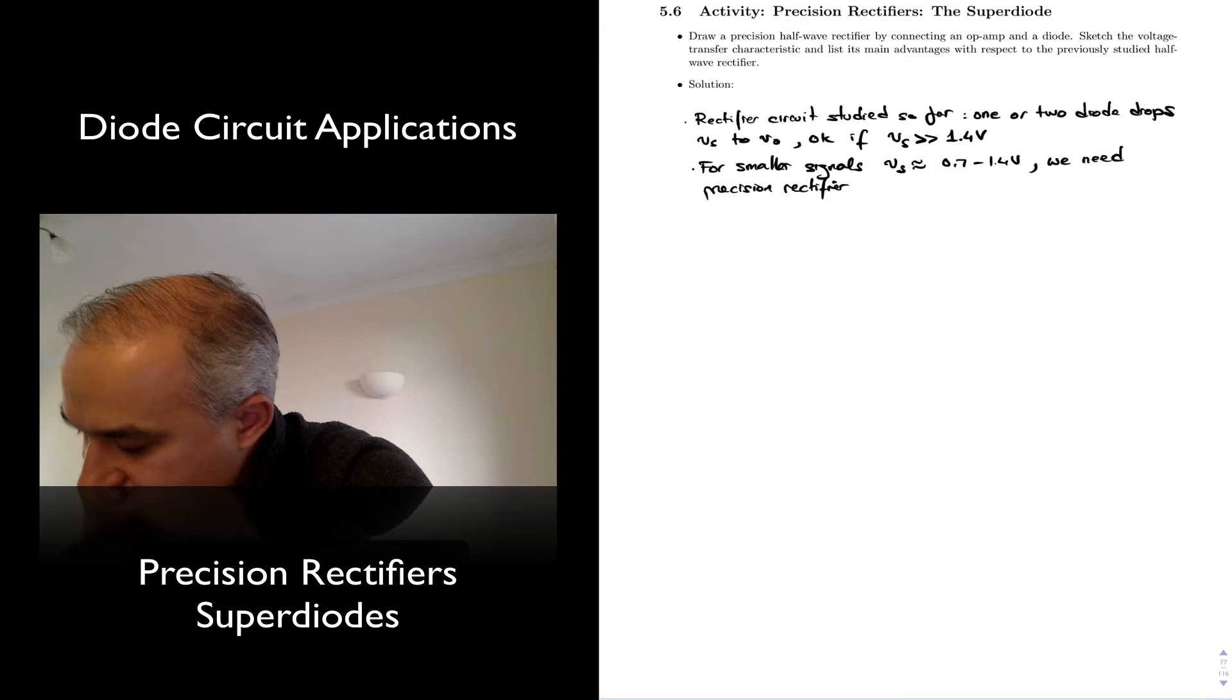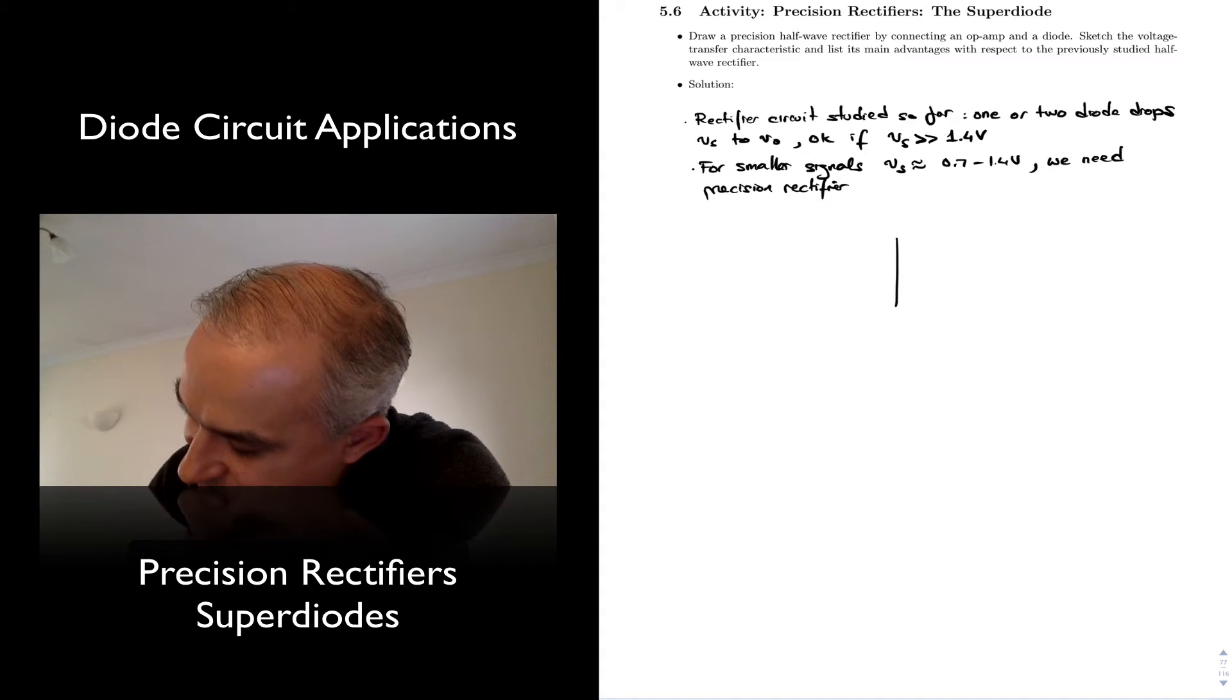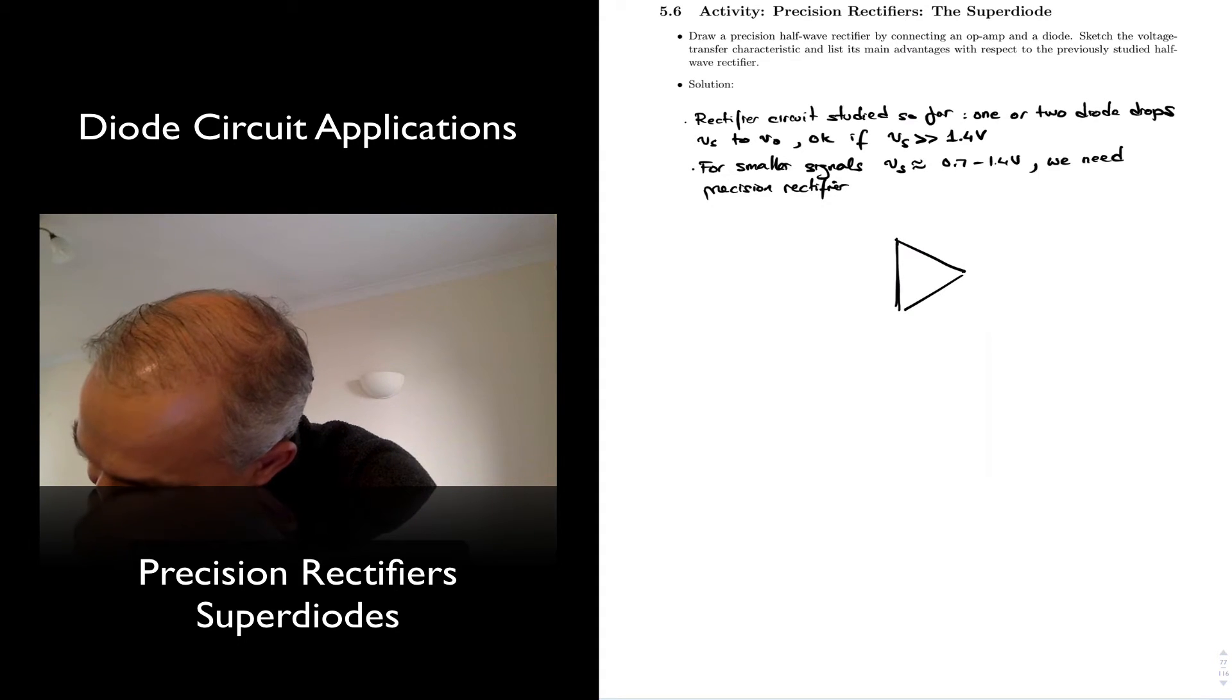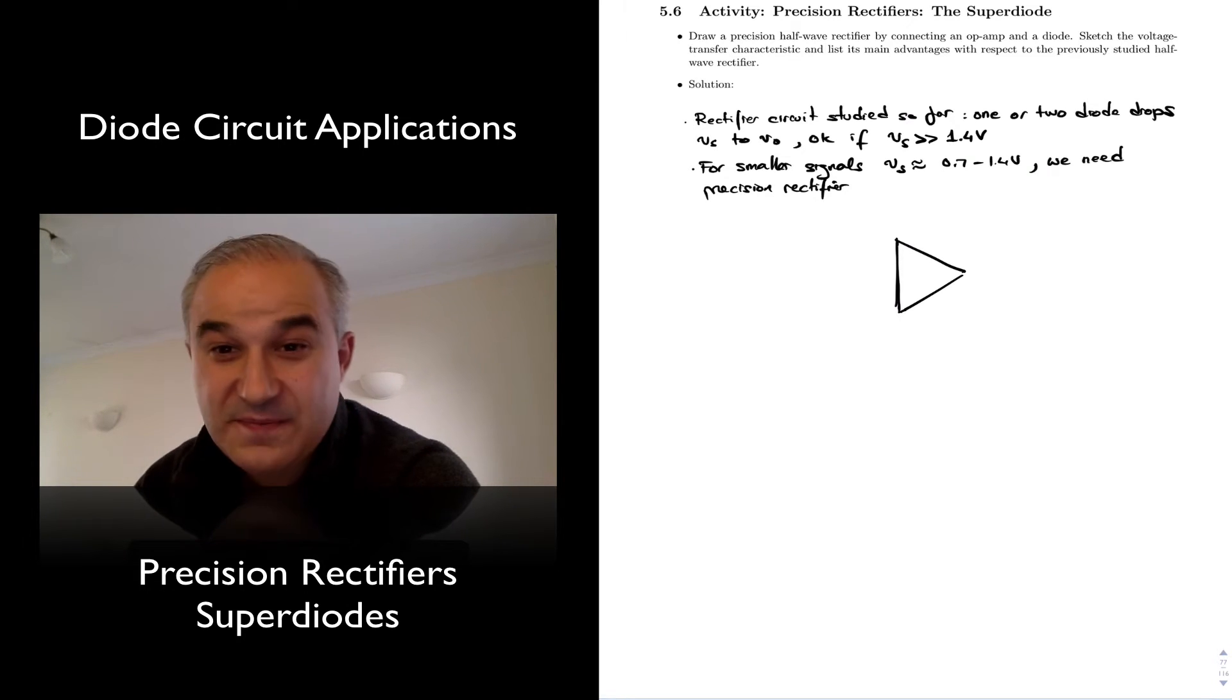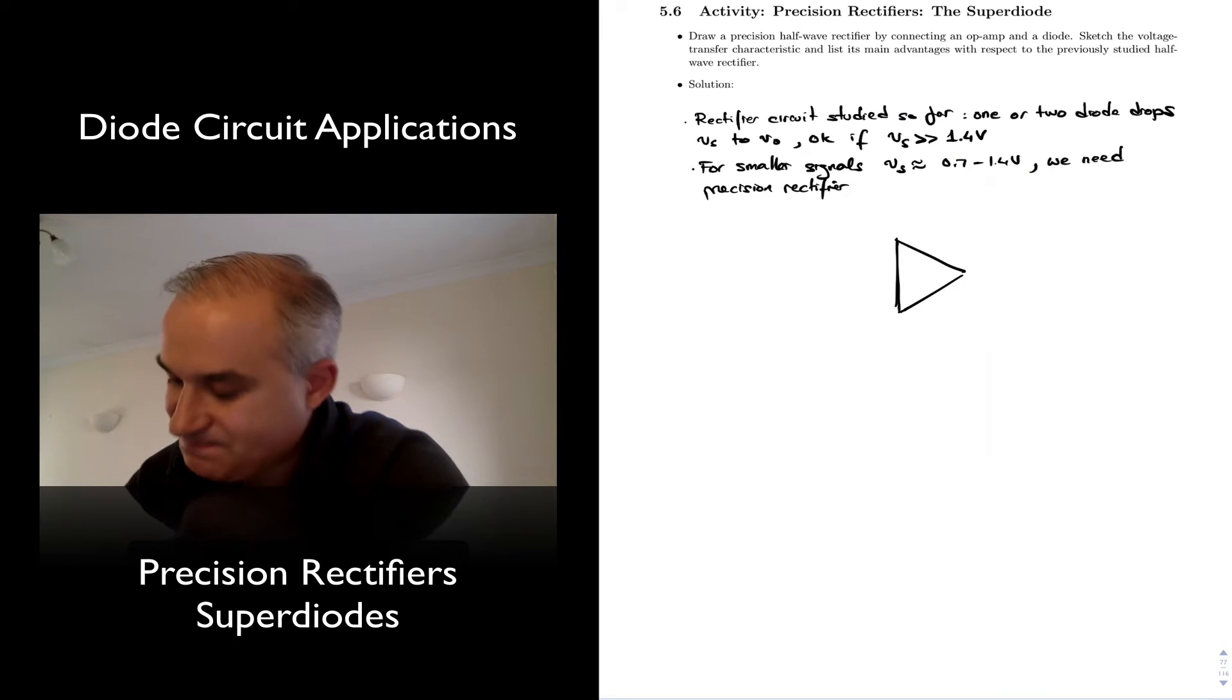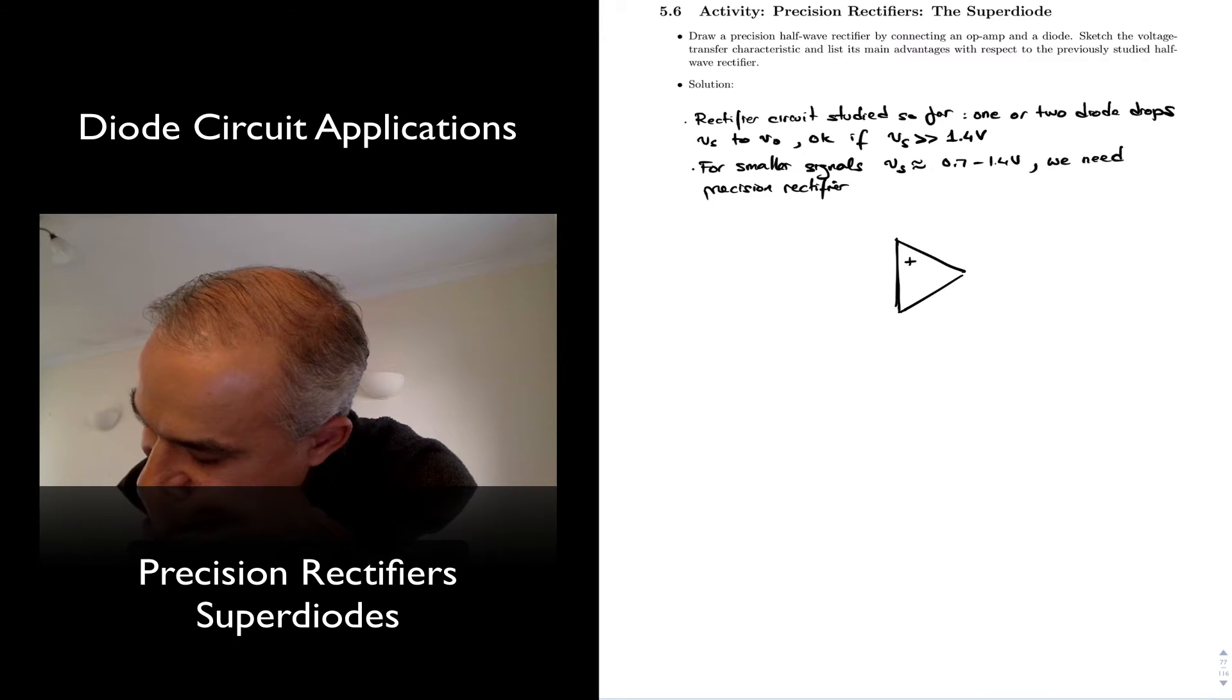If you think about an operational amplifier and how it works with negative feedback, anything that we put in the feedback, in the negative feedback, even a non-linear element, can get linearized. And so, consider the circuit.